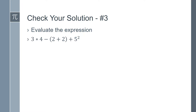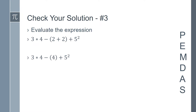Let's start by once again writing PEMDAS on the side of the page. The first thing that we need to do is work inside the parentheses. 2 plus 2 is 4, so we now have the expression 3 times 4, minus 4, plus 5 squared. Next we move on to exponents. 5 squared means 5 times 5, so that is 25. So now the expression is 3 times 4, minus 4, plus 25.